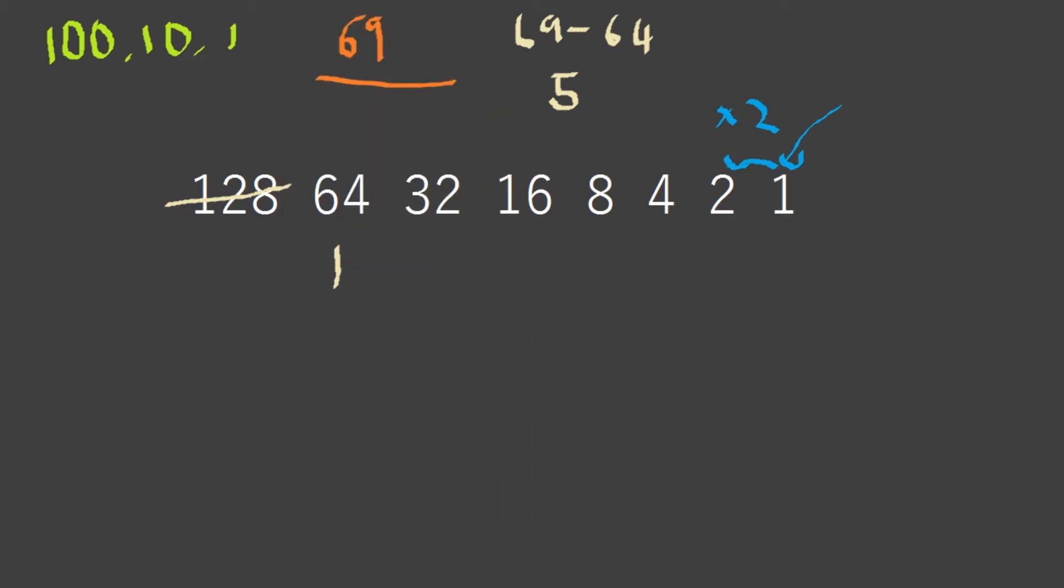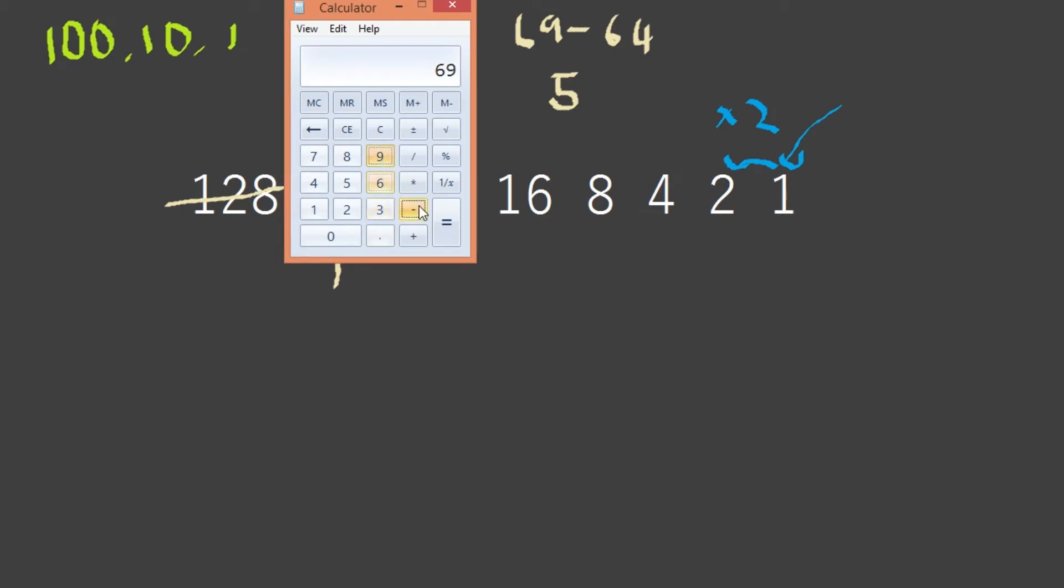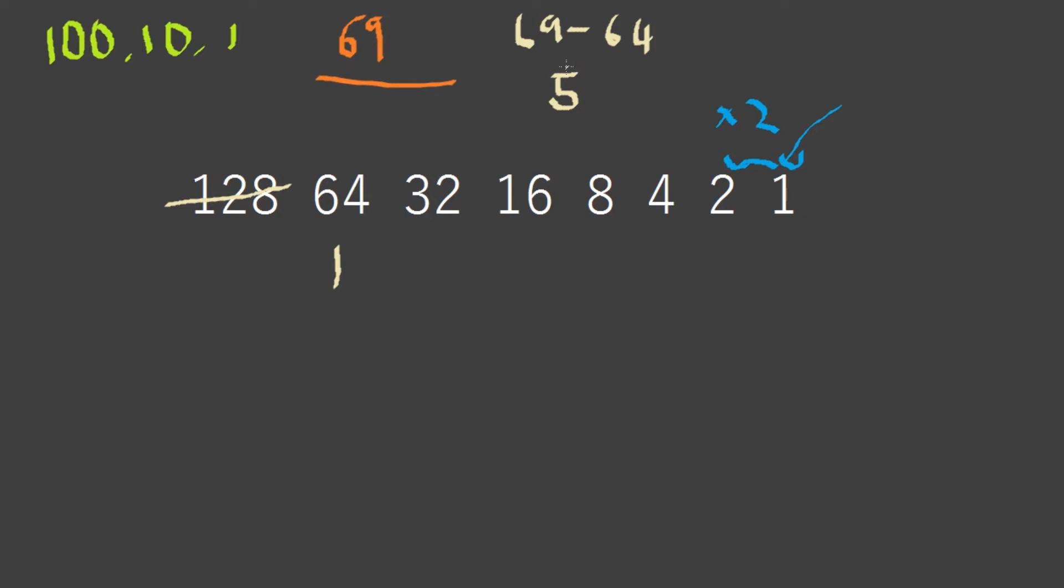Now we have 5. Can 32 go into 5? No, it's too big. Can 16 go into 5? No. Can 8 go into 5? No. Can 4 go into 5? Yes. When it doesn't go in, you add a 0.